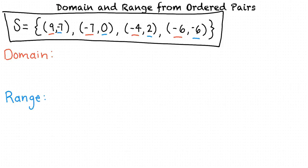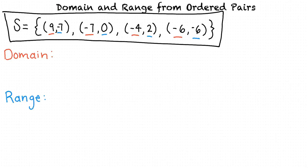How can we give this answer in set notation? We can represent the domain and range by listing each number in ascending order — meaning from smallest to largest — within braces, and separating each number with a comma.